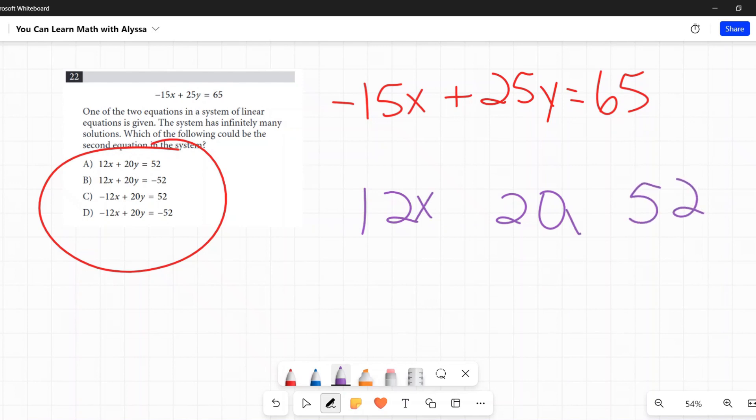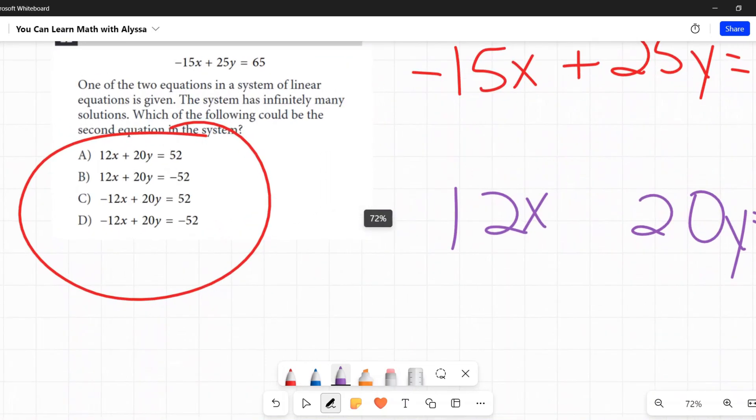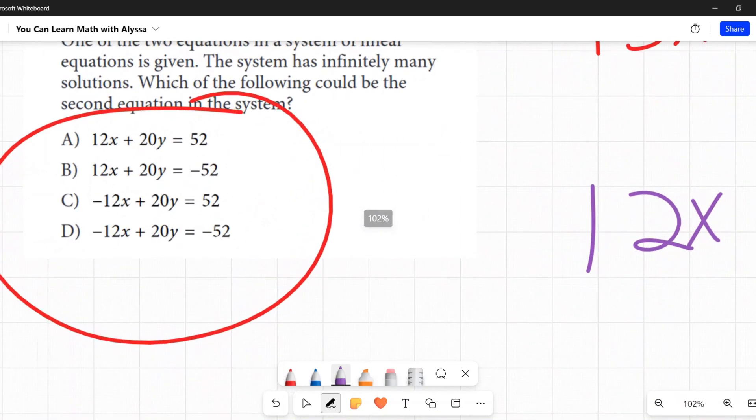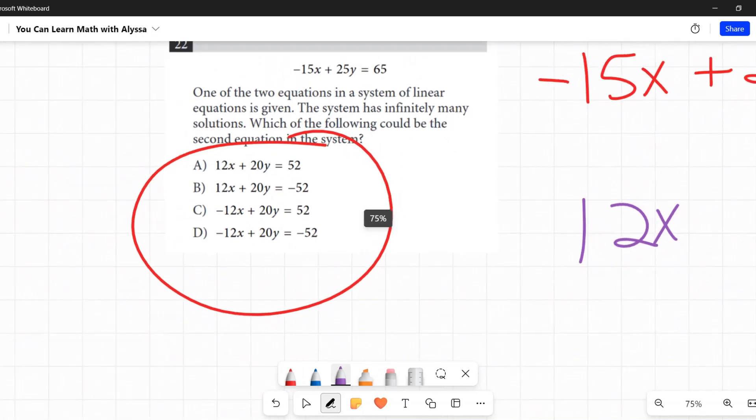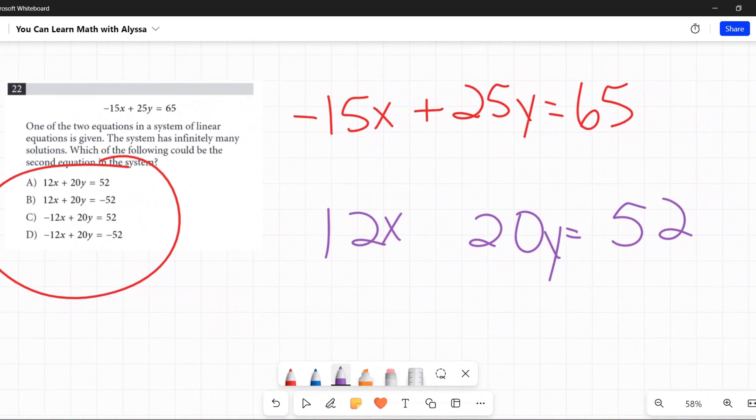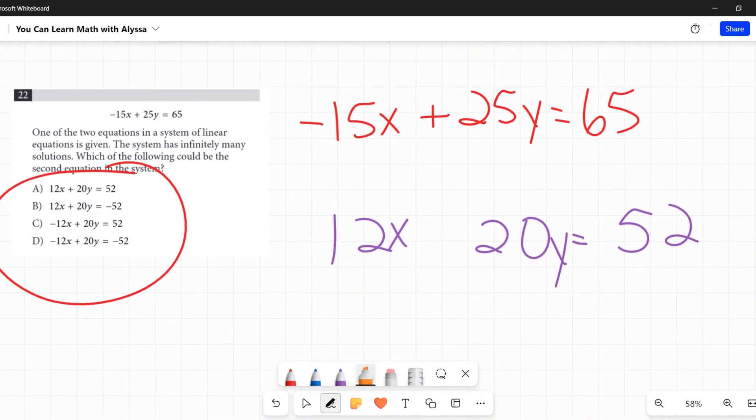But there is one small difference and it has to do with the signs. So look what's going on here. We got positive positive, positive positive, positive negative, negative positive, positive negative, positive negative. That's the only difference. The numbers are the same, so I don't have to worry about the numbers. They've taken that part of the equation out of it, so now I just have to make sure that the signs would match.